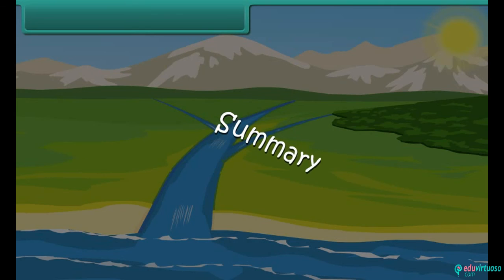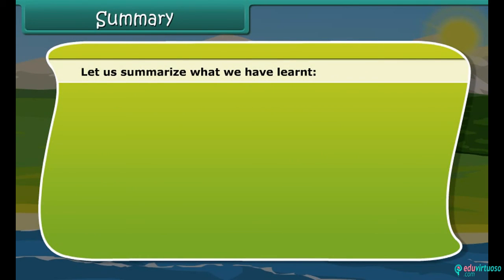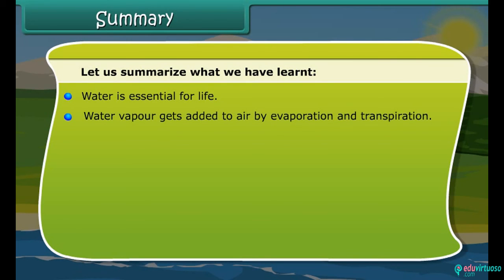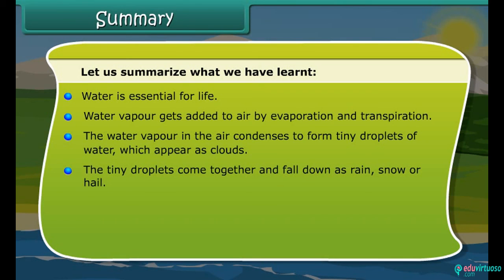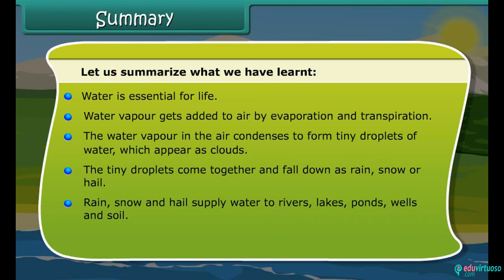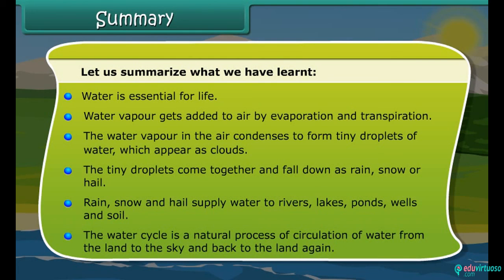Summary: Water is essential for life. Water vapor gets added to air by evaporation and transpiration. The water vapor in the air condenses to form tiny droplets of water, which appear as clouds. The tiny droplets come together and fall down as rain, snow or hail. Rain, snow and hail supply water to rivers, lakes, ponds, wells and soil. The water cycle is a natural process of circulation of water from the land to the sky and back to the land again.